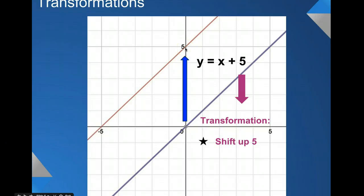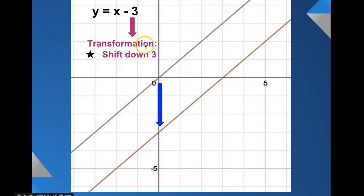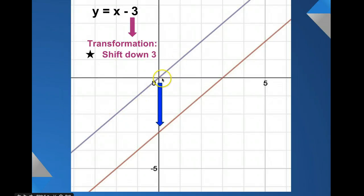It shifts upward to 5. Nothing has changed in the slope — our slope has no transformation. All that we've done is taken our y-intercept and shifted it up to 5. Here's another example. We have a minus 3, which is a shift down of 3. Here's our parent function in purple, and our transformation shifts it down to negative 3, but the slope stays the same.